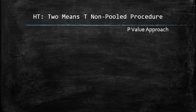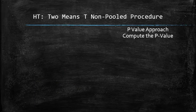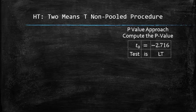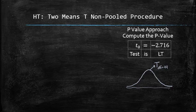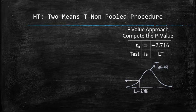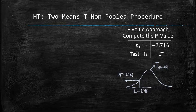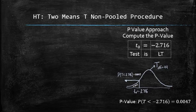In the p-value approach, we compute the p-value using the test statistic and the type of test. We find the p-value using the t-curve with 44 degrees of freedom. In a left-tail test, the p-value is the area to the left of the test statistic — in this case, to the left of negative 2.716. That probability is equal to 0.0047.